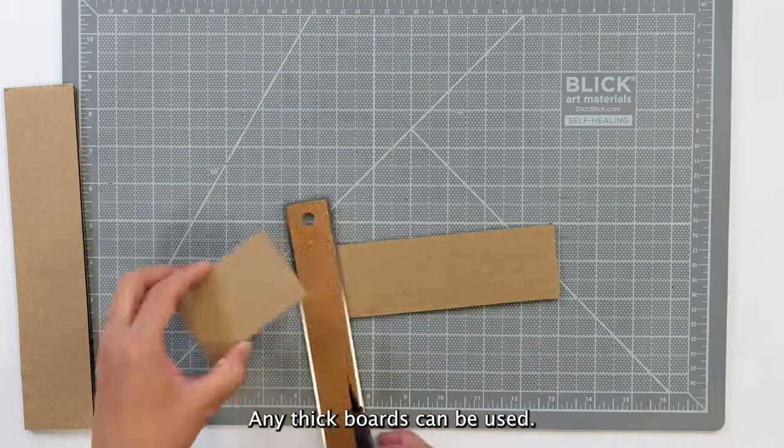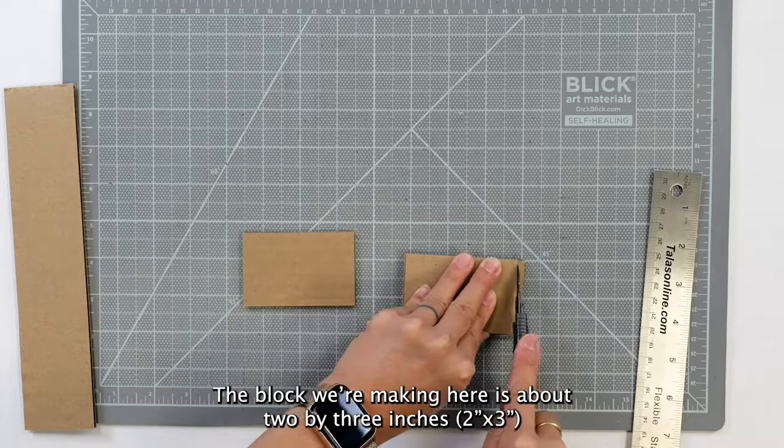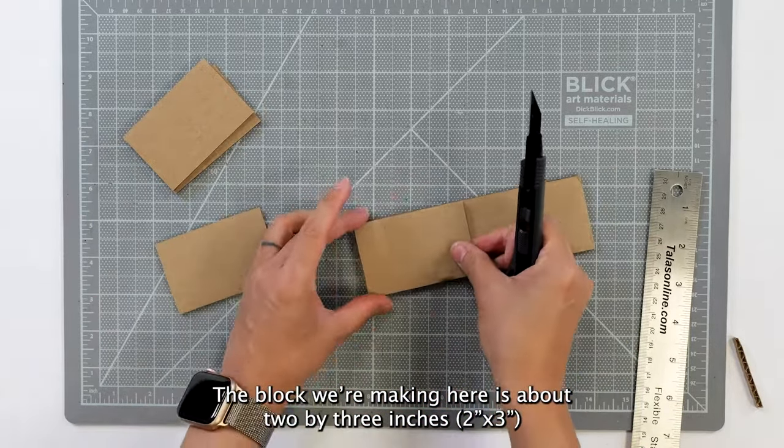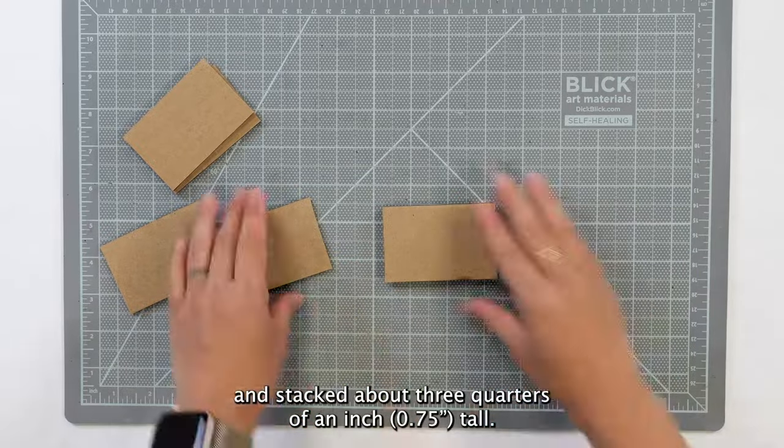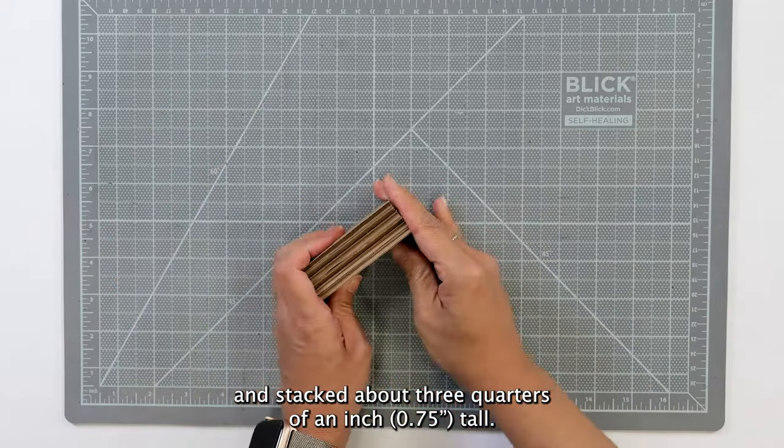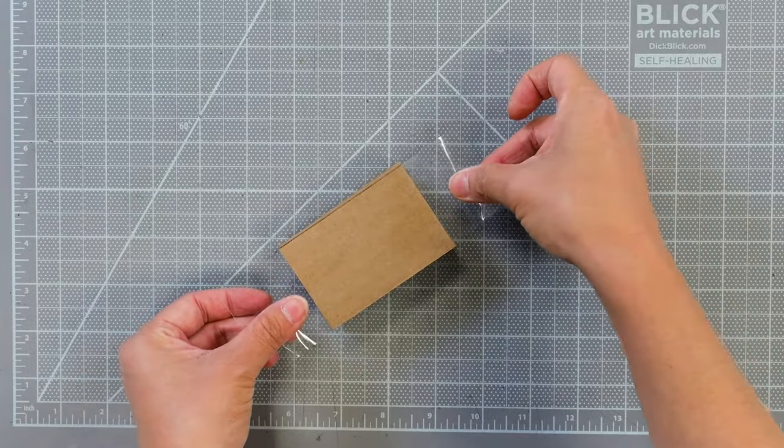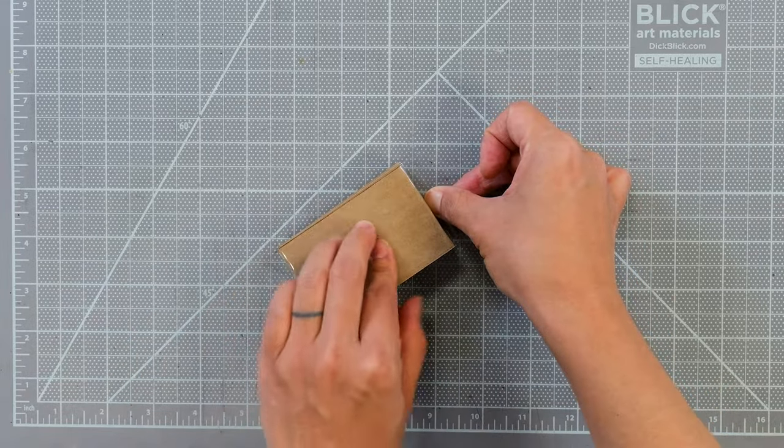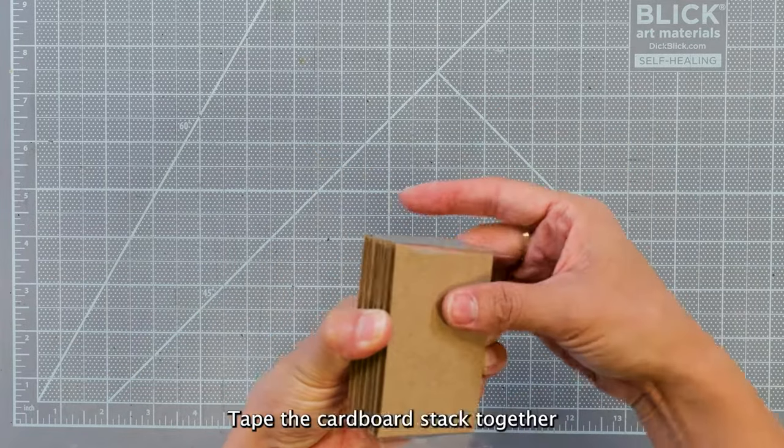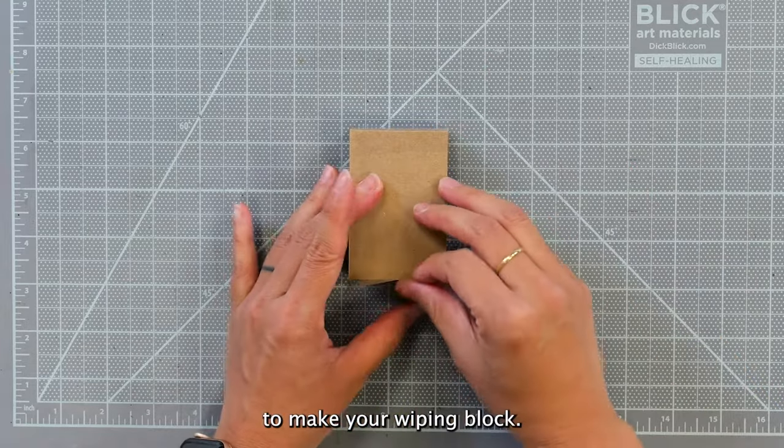Any thick boards can be used. The block we're making here is about 2 by 3 inches and stacked about three quarters of an inch tall. Tape the cardboard stacked together to make your wiping block.